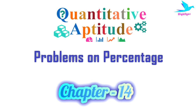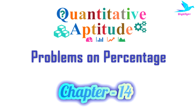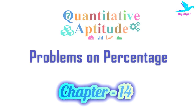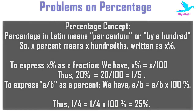Our next chapter for quantitative aptitude is percentage. First let's understand the concept of percentage. Percent in Latin means per centum or by a hundred, so X percent means X hundredth, written as X%. To express X percent as a fraction, we have X percent equals X by 100. Thus 20 percent equals 20 by 100.